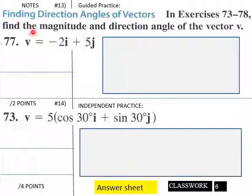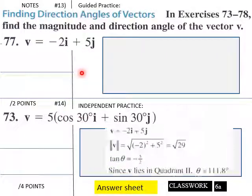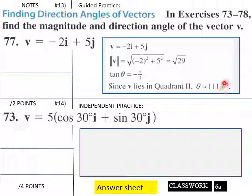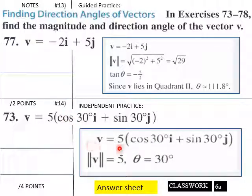Find the magnitude and direction angle of the vector v equals -2i plus 5j. The magnitude equals the square root of 29. Our tan θ equals negative 5 over 2. Since v lies in quadrant two, theta equals approximately 111.8 degrees. For the next part, v equals 5·cos30° i plus sin30° j, so the magnitude equals 5 and theta equals 30 degrees.